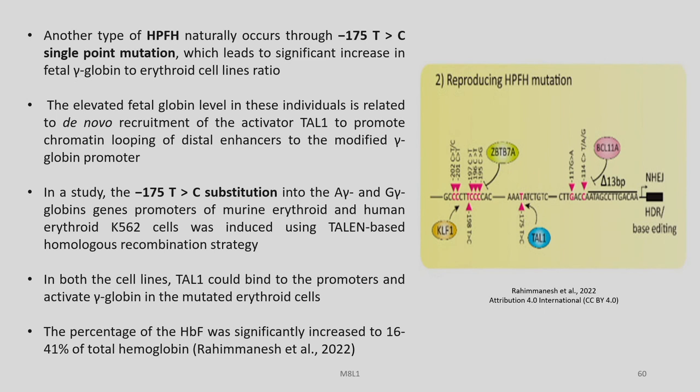Another type of HPFH occurs through the -175 T2C single point mutation, which leads to a significant increase in the fetal gamma globin to erythroid cell lines ratio. The elevated fetal globin level is related to de novo recruitment of activated TAL1 to promote chromatin looping of distal enhancers to the modified gamma globin promoter. In a study, the -175 T2C substitution into the A-gamma and G-gamma globin gene promoters of murine and human erythroid K562 cells was induced using a TAL1-based homologous recombination strategy, resulting in HbF increase to 16 to 41 percent of total hemoglobin.